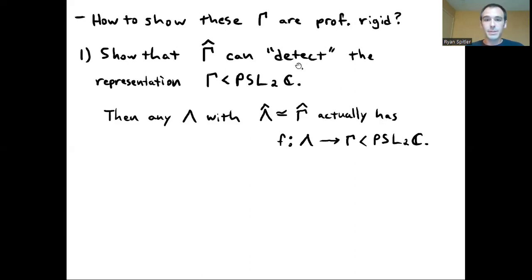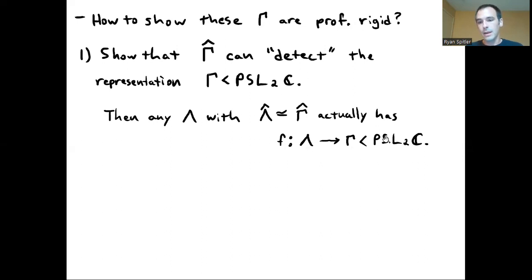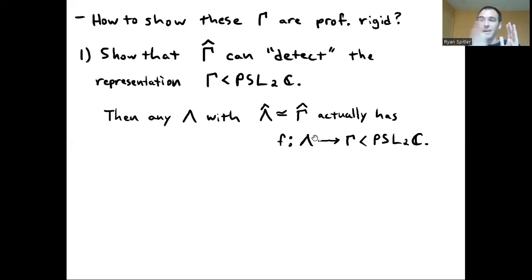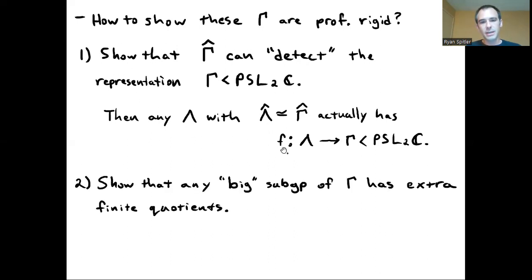The consequence of being able to detect the representation is that any other group Lambda — finitely generated and residually finite — with the same profinite completion as Gamma actually has a representation, or a homomorphism at least, from Lambda to Gamma as a subgroup of PSL₂C. Because Lambda has the same profinite completion as Gamma, and the finite quotients of Gamma can detect this representation, we're actually able to produce a special representation for Lambda.